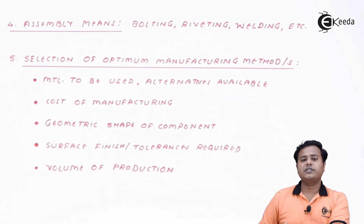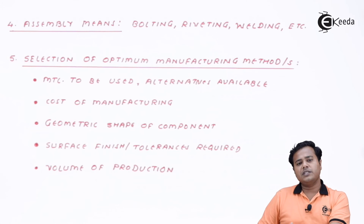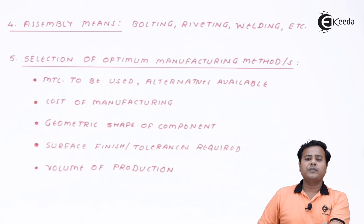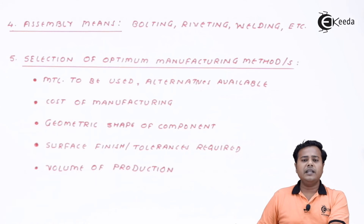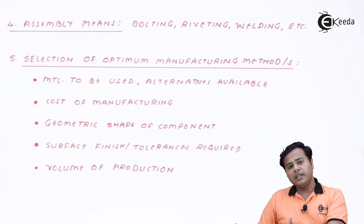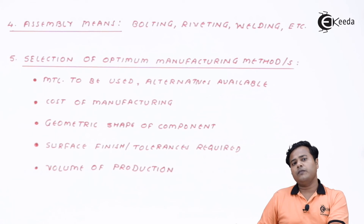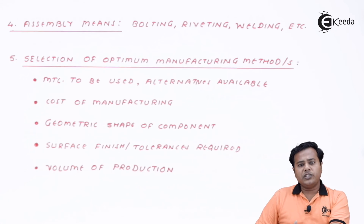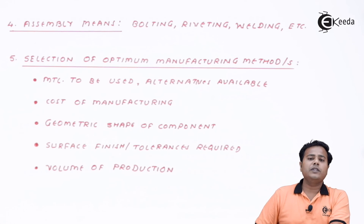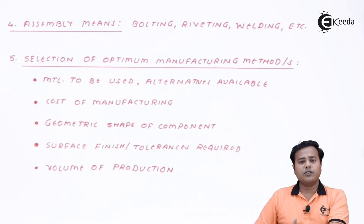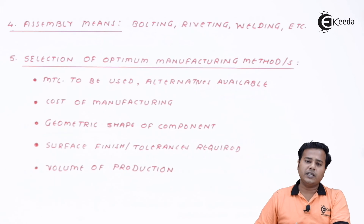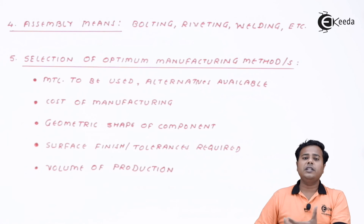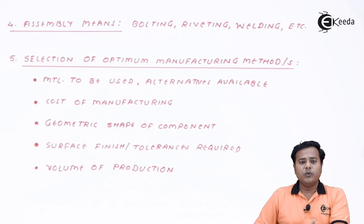Cost of manufacturing is a very important criterion to consider from the beginning. If we design randomly, we may end up with a very high manufacturing cost. But if we take care of this factor from the start, we will arrive at an economic manufacturing process. Regarding the geometric shape of the component: if it is simple, we can go for deformation processes; if it is complex, we should plan for casting from the beginning and select the material and other criteria of material removal accordingly.